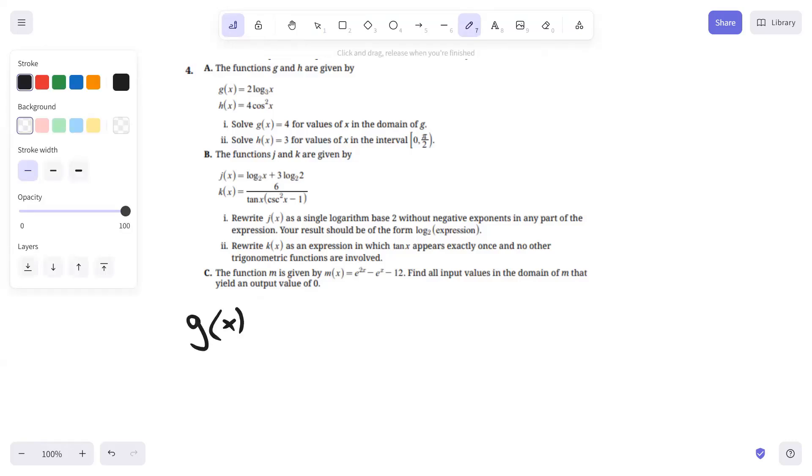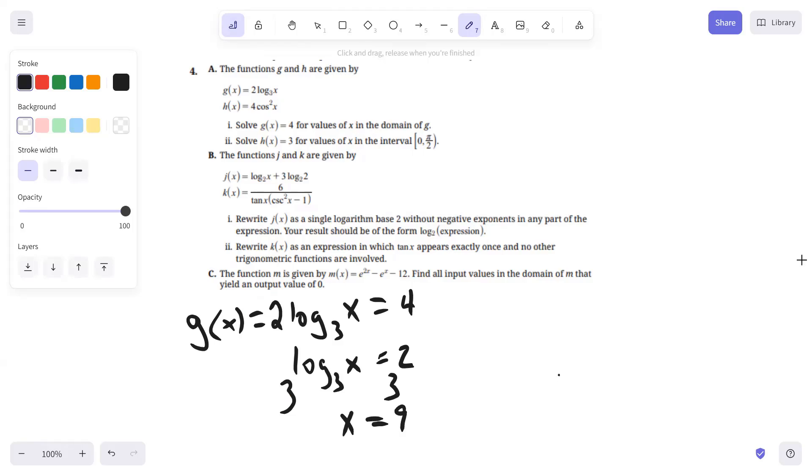We have G of X equals two log base three of X equals four. Either bring the two up and make it X squared or divide the two off. I recommend dividing the two off in this case, and I'll talk about why in a minute. If we exponentiate both sides with base three, we would get X equals nine.